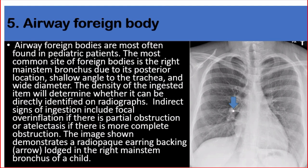Number five: airway foreign body. Airway foreign bodies are most often found in pediatric patients. The most common site is the right mainstem bronchus due to its posterior location, shallow angle to the trachea, and wide diameter. The density of the ingested item will determine whether it can be directly identified on radiographs. Indirect signs include focal overinflation if there is partial obstruction, or atelectasis if there is more complete obstruction. The image shown demonstrates a radiopaque earring backing lodged in the right mainstem bronchus of a child.